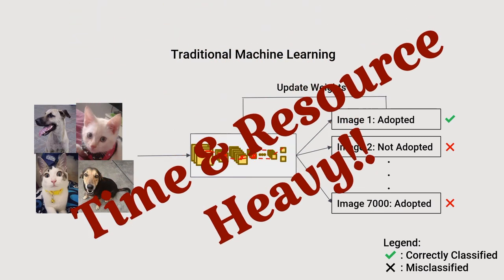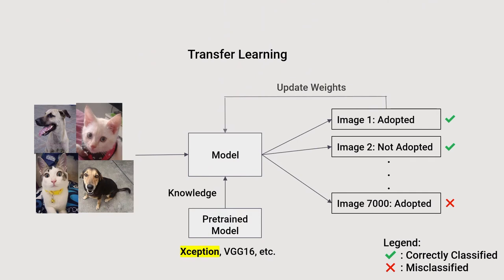But in reality, this takes too much time and resources to train and fit the model for our task. Instead, we can use transfer learning to not only speed up the training, but also improve our model's accuracy. Pre-trained models such as Xception have already been trained on millions of images and have learned the patterns for image classification. Thus, by transferring the knowledge of this pre-training into our model as seen in the diagram, this speeds up the training process and results in the model achieving higher accuracy in a shorter period of time.